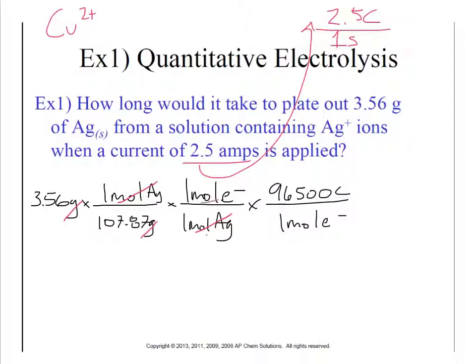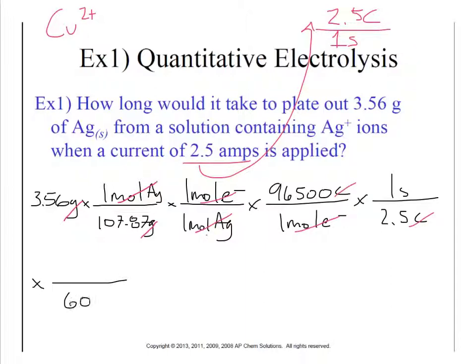Now we've gotten ourselves to coulombs, so we can convert to time. There are 2.5 coulombs for every one second — from our amperage. Coulombs cancel coulombs, leaving seconds. We then multiply by 1 minute per 60 seconds to convert to minutes, and our final answer turns out to be 21 minutes. With this amount of current applied, we would generate 3.56 grams of silver in about 21 minutes.